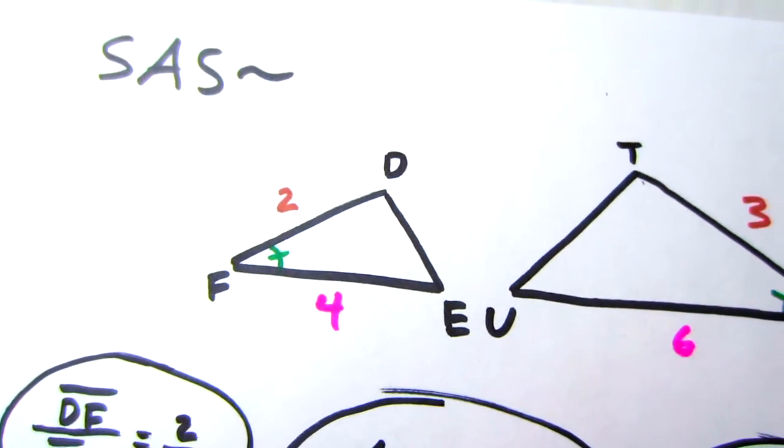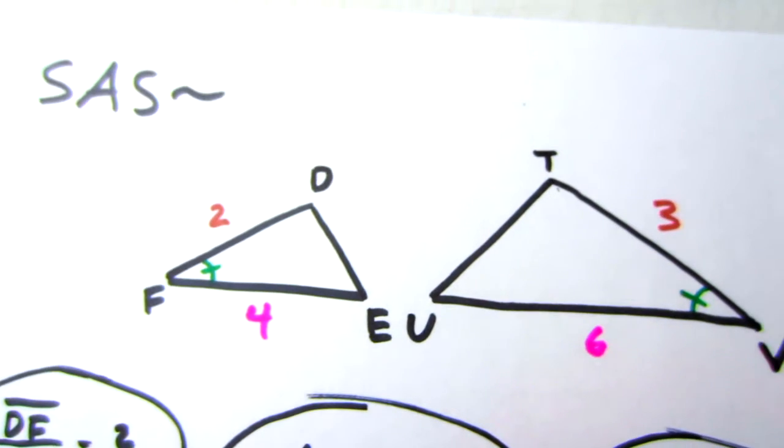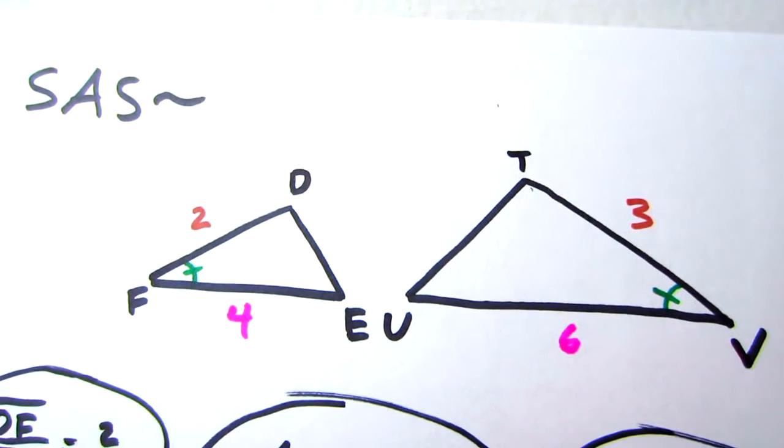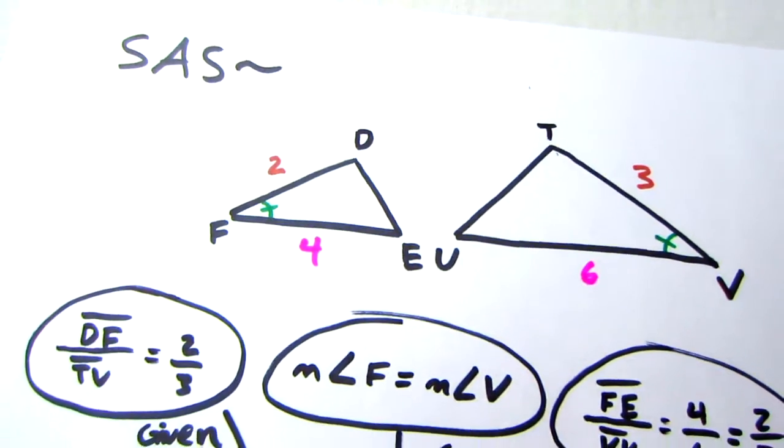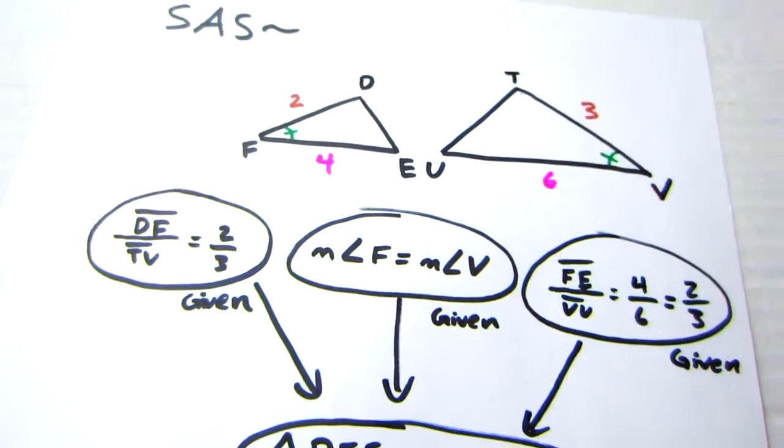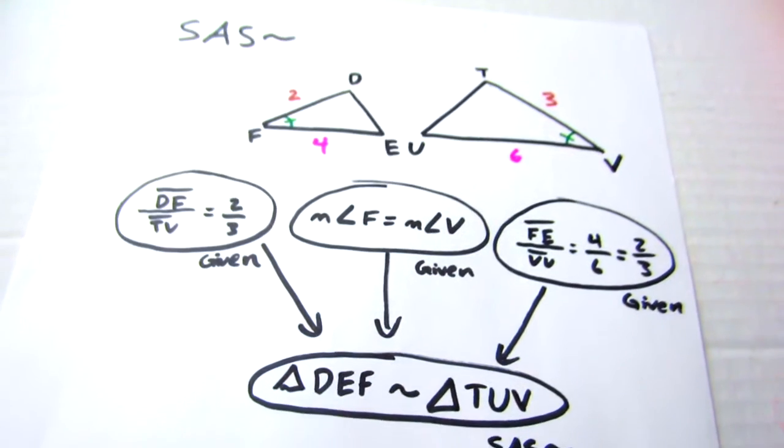Second example is side angle side similarity. In this example, you'll see two triangles, two sides given to you and an angle in the middle. To prove side angle side similarity, you need to again show that the corresponding sides' ratios are the same—in this case both two-thirds—and